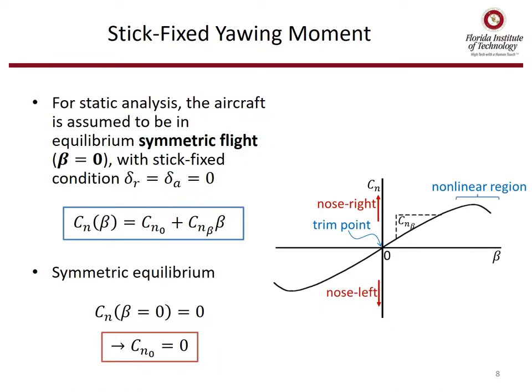For static analysis, the aircraft is assumed to be in equilibrium symmetric flight with a sideslip angle of zero and the controls fixed — delta-r and delta-a are also zero. This gives us a linear equation in a y equals mx plus b type of relationship, where the y-intercept is C_n zero, the slope is C_n beta, and our x is beta. In symmetric equilibrium, beta equals zero, so C_n zero is going to be zero.